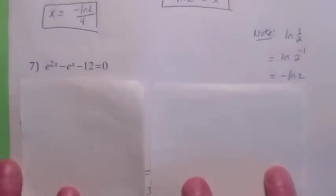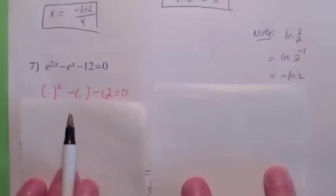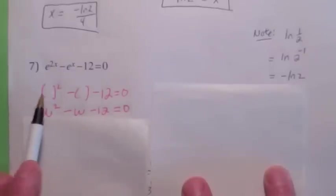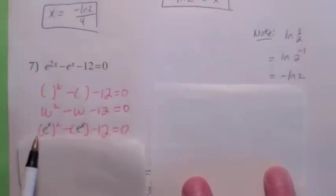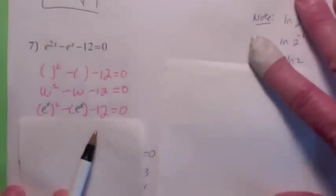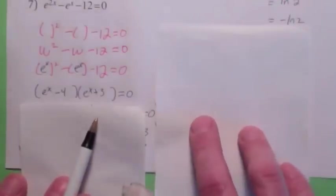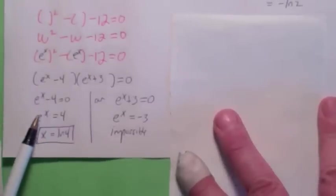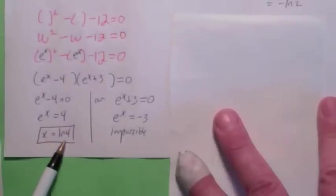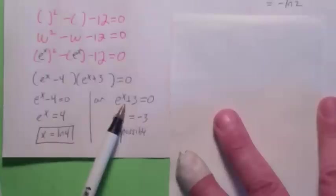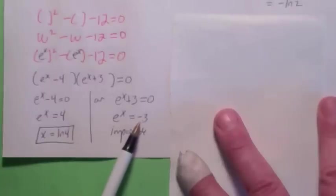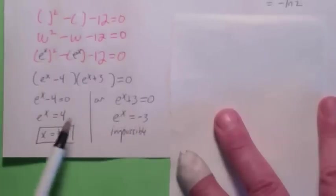Here's another one with a trick: it's actually quadratic in form. Something squared minus that something minus 12 equals 0, where that something is e to the x. Think of it as (e to the x) squared minus (e to the x) minus 12. Factor it, and set each factor equal to zero. From the first factor, e to the x equals 4, so x equals ln(4). From the second factor, you'd get e to the x equals negative 3 — but e to the x can never equal a negative number, since its range is always greater than 0. So that factor gives no solution, and x equals ln(4) is the only answer.